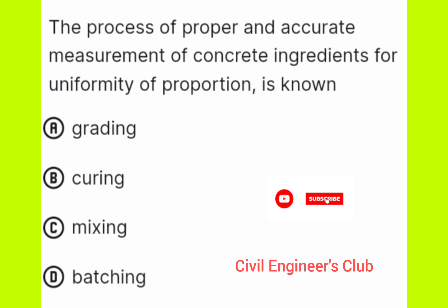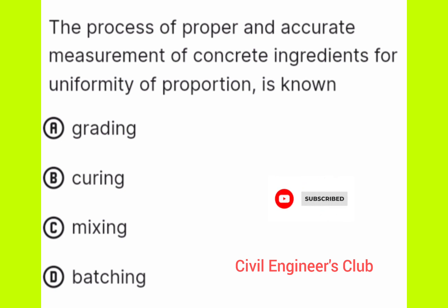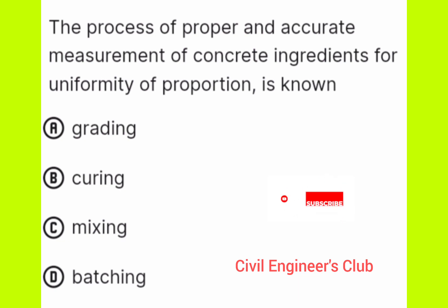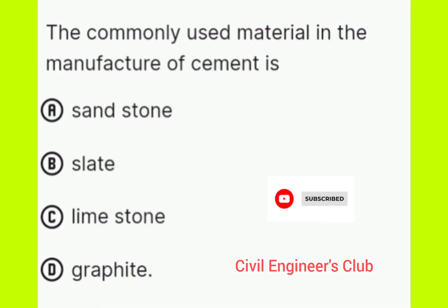Next question: The process of proper and accurate measurement of concrete ingredients for uniformity of proportion is known as — Option A: grading, Option B: curing, Option C: mixing, Option D: batching. The correct answer is option D, batching.